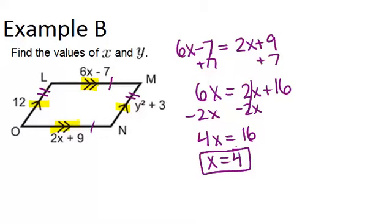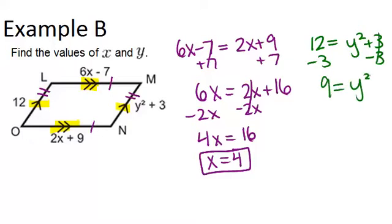I can do the same thing to solve for Y. So for Y, I know that 12 equals Y squared plus 3. I'm going to subtract 3 from both sides, and get 9 equals Y squared. So there are actually two solutions to this equation. Y could equal 3, or Y could equal negative 3, because either of these two numbers, when you square them, will equal 9.